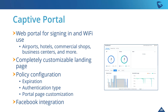The captive portal is the web portal for signing in and Wi-Fi use. From airports, hotels, commercial shops, and business centers, you get a completely customizable landing page with policy configuration. You can set up the expiration time of the Wi-Fi connection, the authentication type, and portal page customization — you can literally upload custom HTML landing pages for the captive portal. It also has Facebook integration, so people can use Facebook tokens to log into Wi-Fi networks, which is really useful for commercial shops, cafes, and restaurants.